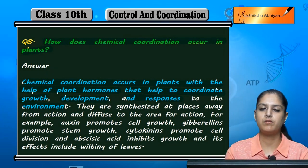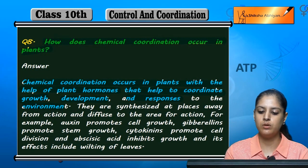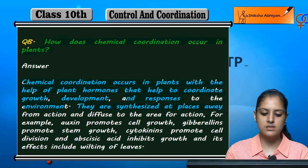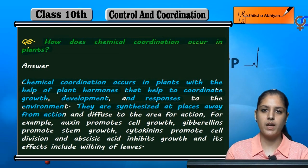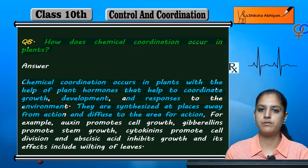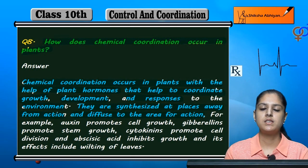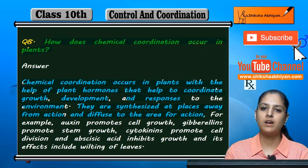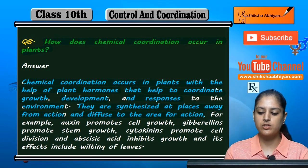Plant hormones coordinate growth, development, and environmental responses. They are synthesized at places away from the area of action and diffuse to the area of action.